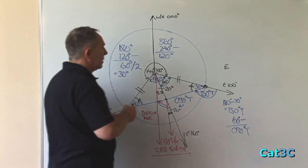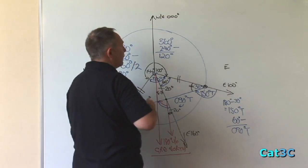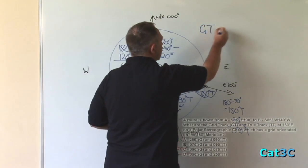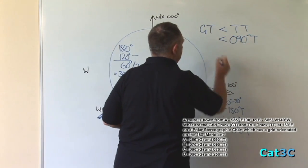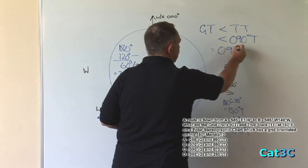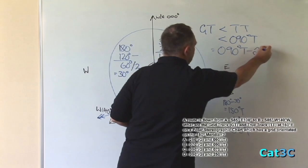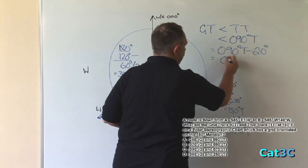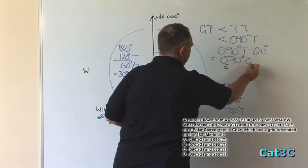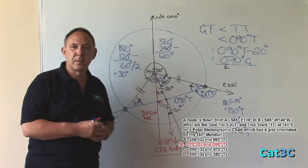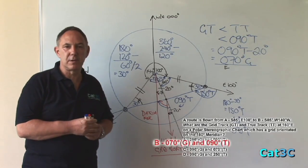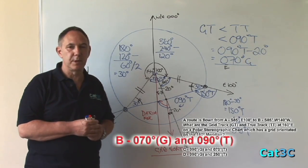So the grid track is less than the true track, which is less than 090 degrees true, which is equal to 090 true minus 20 degrees equals 070 degrees grid. So the final answer that we're looking for is 070 degrees grid and 090 degrees true, option B.